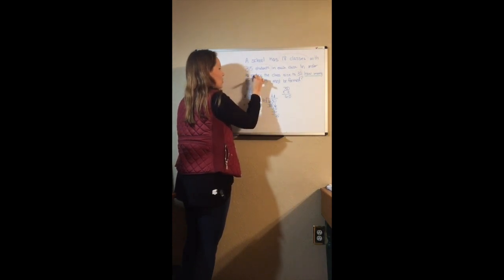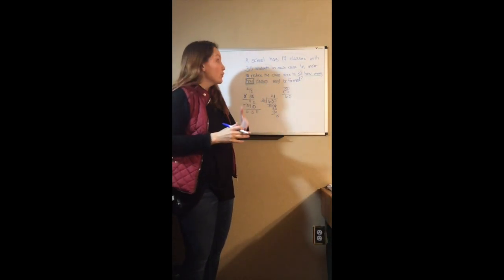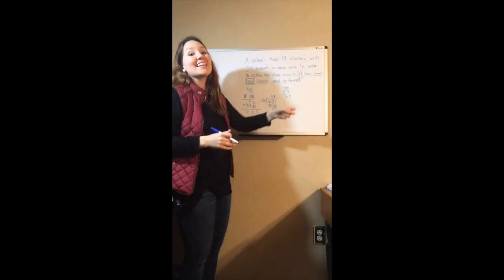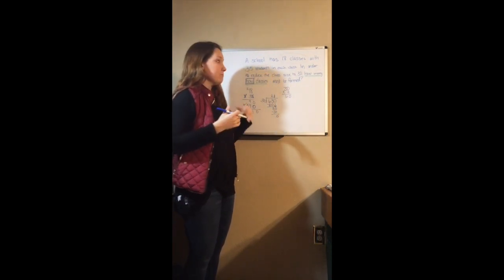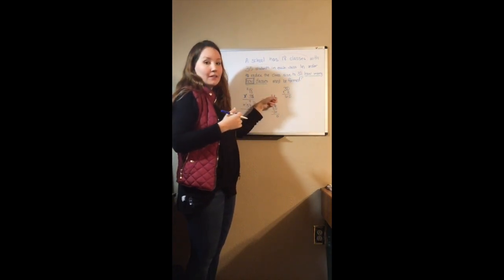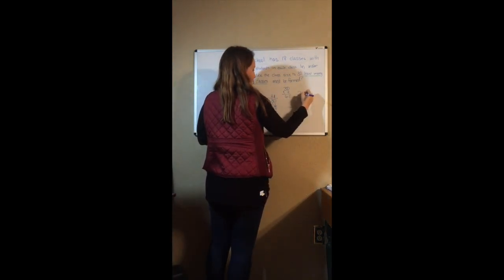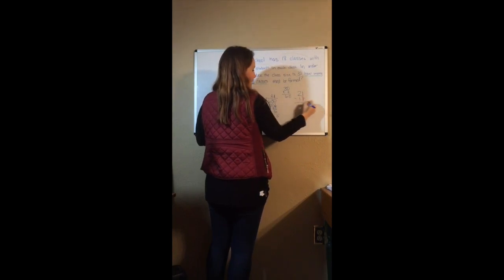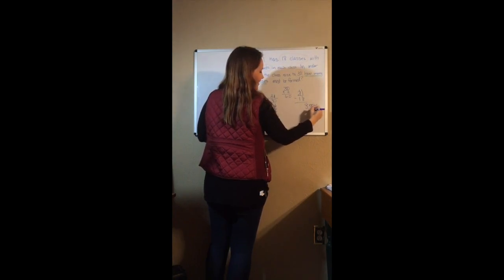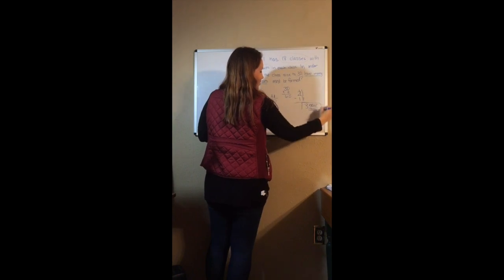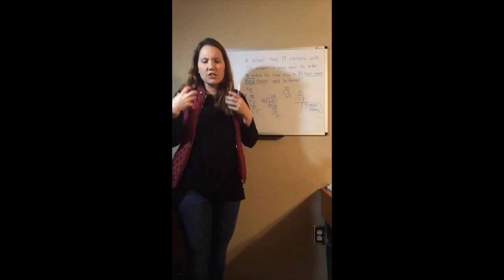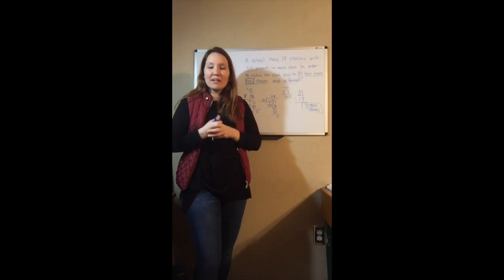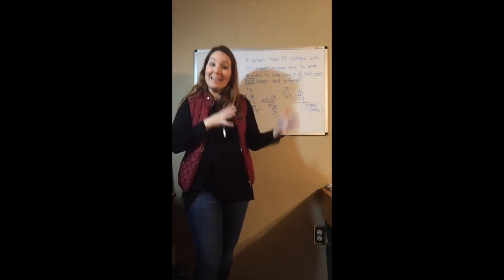But am I done? No — the question asks how many *new* classes. If we started with 18 and now need 21, we find the difference: 21 minus 18 equals 3 new classes. This is one where they really try to trip you up — they want you to say 21 instead of 3. This is more like something you'll see on the GED, where they make you think logically. In the next video we'll look at multiplication and division with positive and negative numbers.